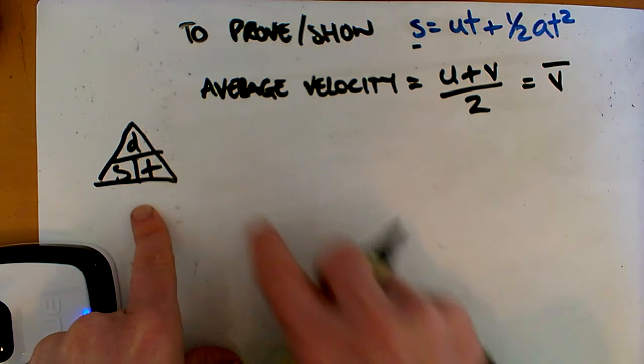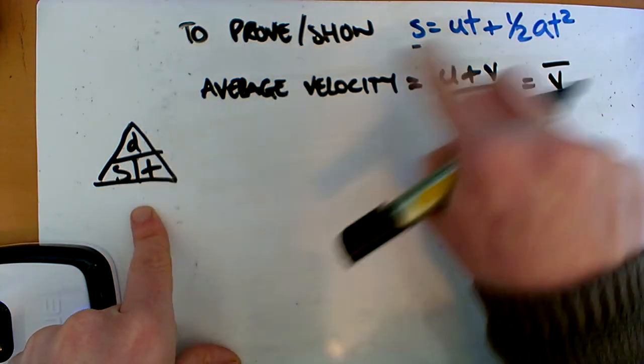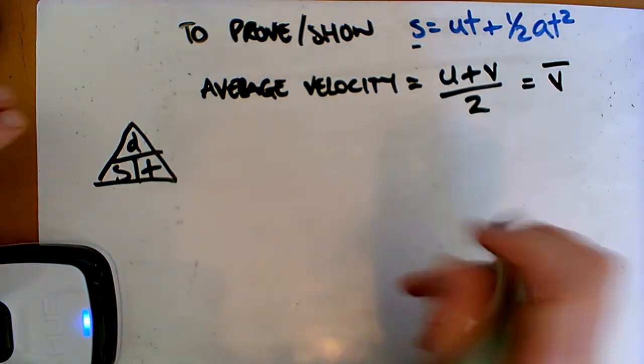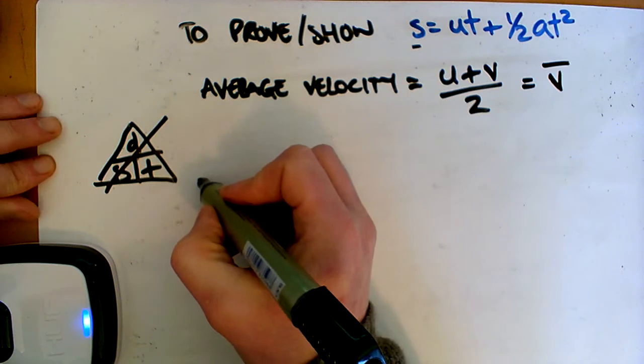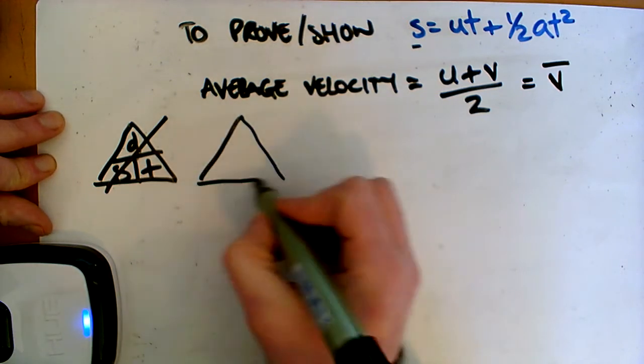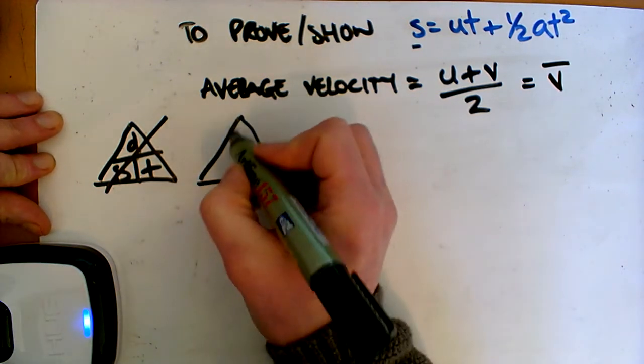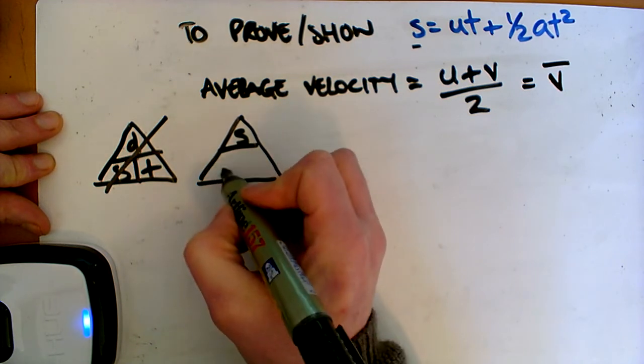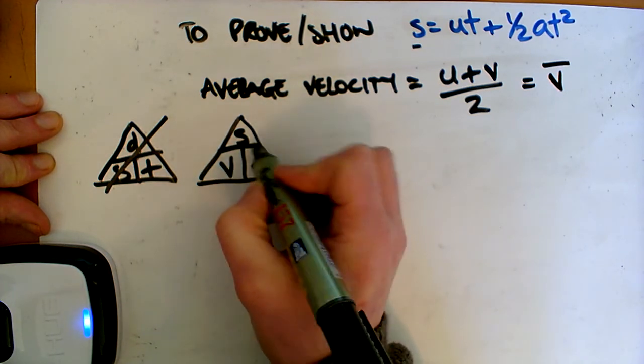But we don't really use these. We don't use distance. We use displacement instead, so it's an S. And we don't use speed. We use velocity. So we'll get rid of that. And our real one that we want to use is going to be our displacement, which is S, over our velocity multiplied by time.